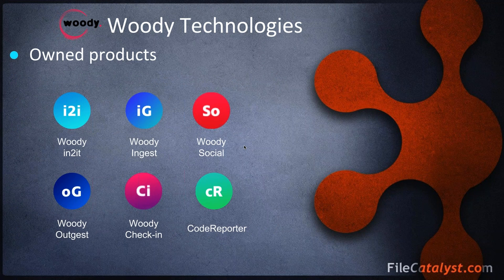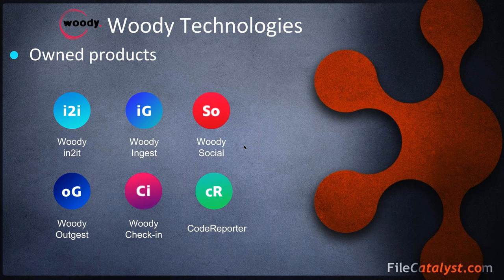The Woody Technologies product line combines owned products, third-party products, and custom developments. Our six owned products include Woody Intuit for manual ingest tasks by journalists and editors, Woody Ingest for automated workflows, and Woody Social for ingest from social networks. We also have Woody Outgest and Woody Chicken, dedicated to Avid customers to streamline workflows in Avid environments, and Code Reporter, a legacy product for transferring content from the field to the main facility.